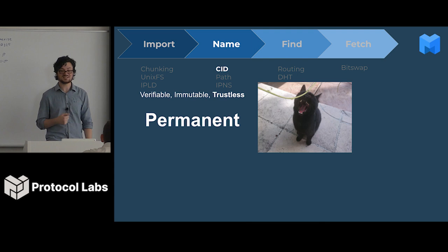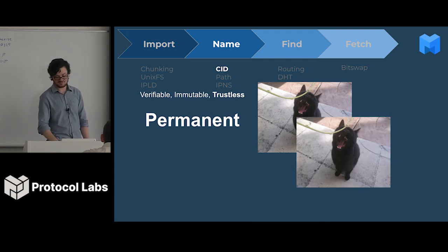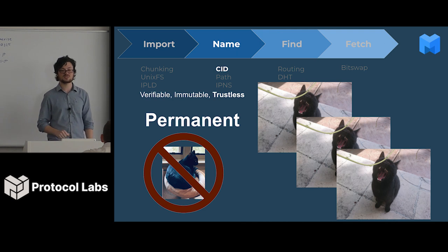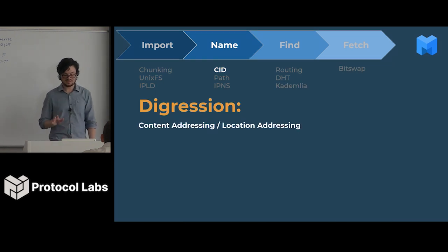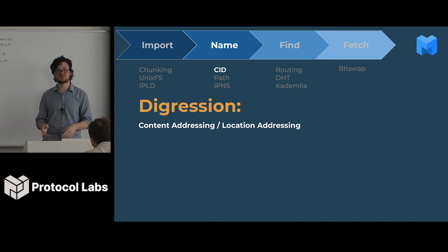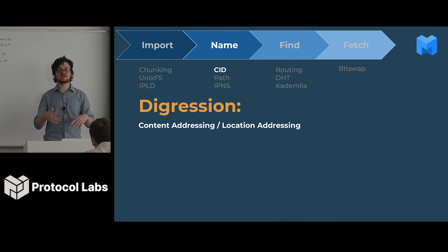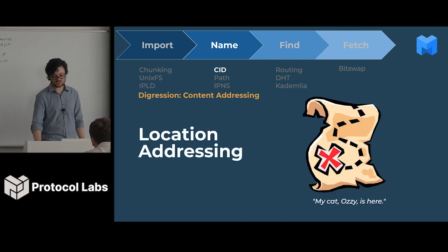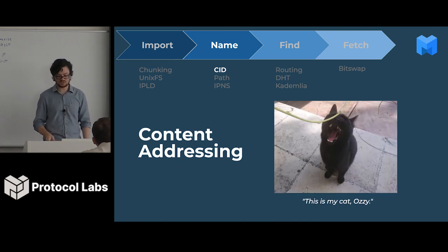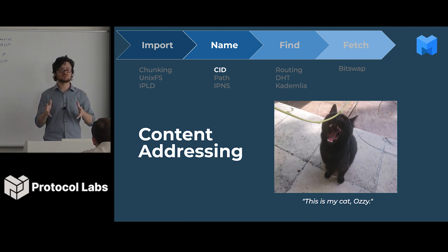For example, this is a picture of my cat Ozzy. If I ask for it again, I get the same picture. I don't get the picture of my other cat, who's less friendly. Content identifiers address content by what it is, not where it is. This is important for IPFS because you fetch from random peers and you don't have to trust them. Location addressing is like saying my cat Ozzy is there — you give someone a map and say go fetch my cat. Content addressing is saying this is my cat, find my cat. Content addressing describes the thing you're looking for; location addressing tells someone where to find it.